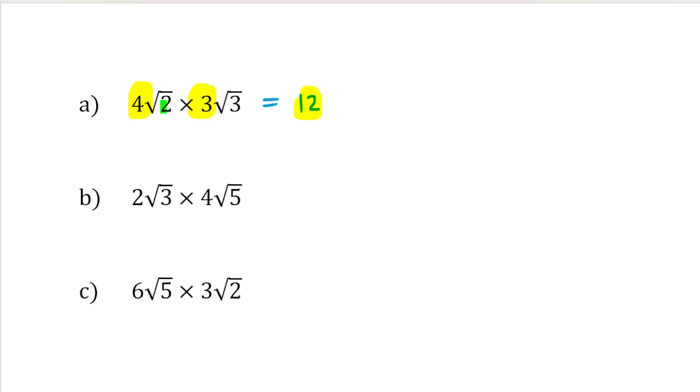And then multiply the surds. So we do root 2 times root 3, and that would give us root 6. So we multiply the 4 and the 3, that gives 12. We multiply the root 2 and the root 3, and that gives root 6.